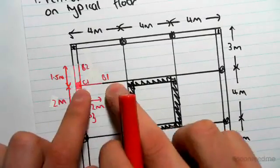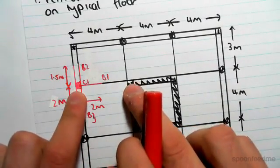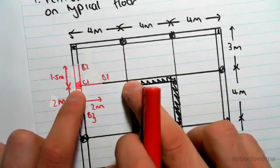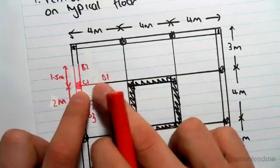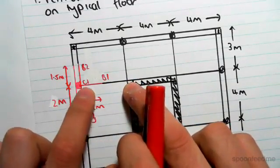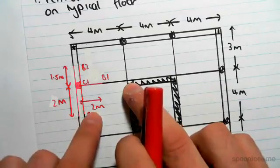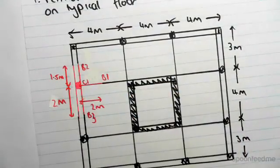This beam length, B1, was 4 meters. It's supported by a column and the shear wall there, so half of it will go into the column, half into the shear core. So 2 meters of this beam will go into the column.